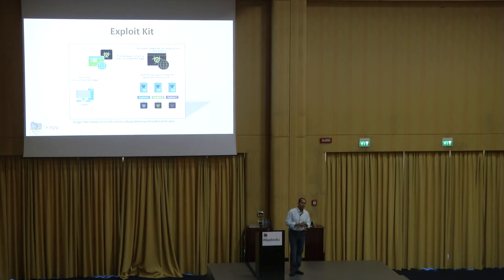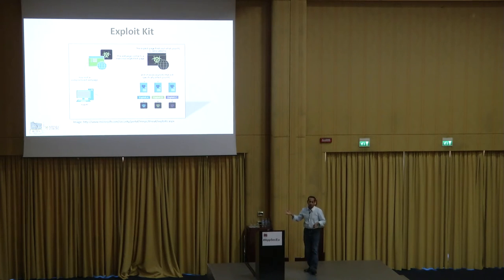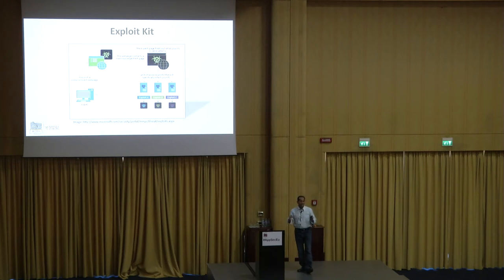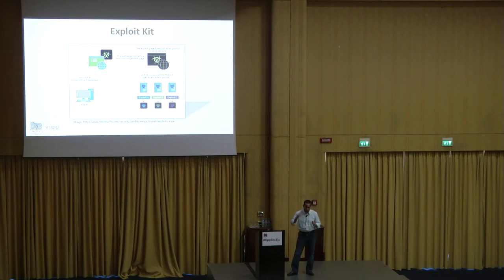Here's how exploit kits work. On the left-hand side you have the victim's PC. When the victim clicks on a bulletin board link, a Facebook link, or something posted by a malicious user, they get directed to a malicious page. Say I'm an attacker — not very technically savvy — and I've just written a program to record all the keystrokes on your machine. It's just a normal program that records keystrokes. It does not know how to infiltrate your machine, attack your machine, or get on your machine.